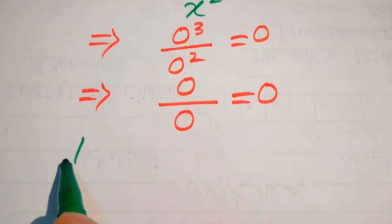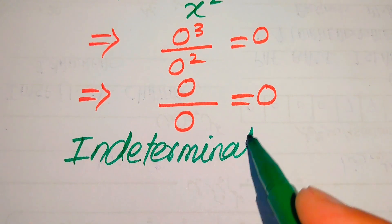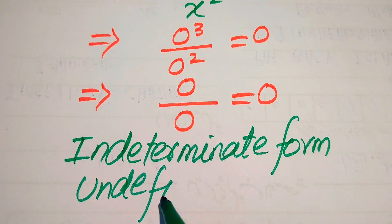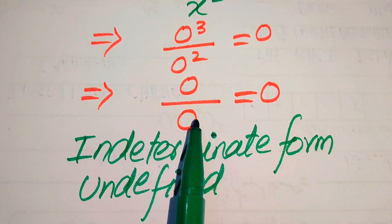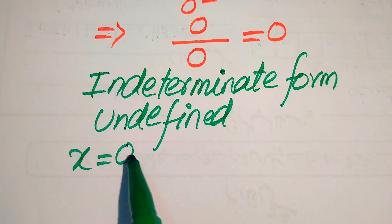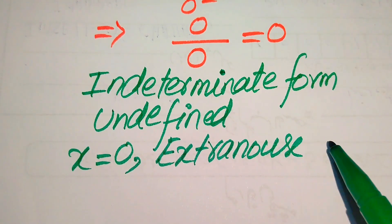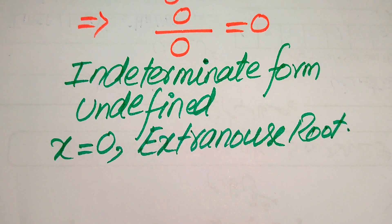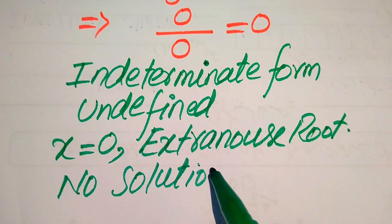The left-hand side is in the 0 by 0 form. The 0 by 0 form is called the indeterminate form, or in other words, the undefined form. Since 0 by 0 is undefined, x equals 0 does not satisfy the equation. We conclude that x equals 0 is an extraneous root of the given equation, and since we cannot find any other value of x, the equation has no solution.